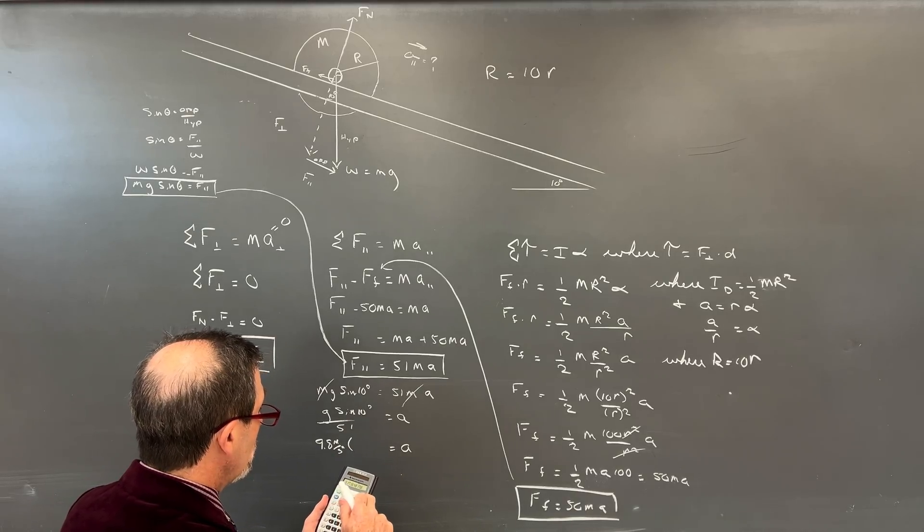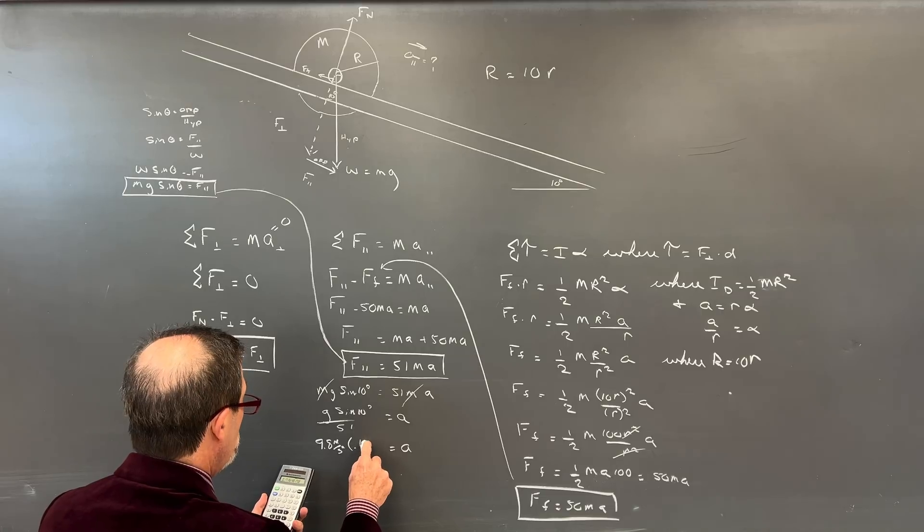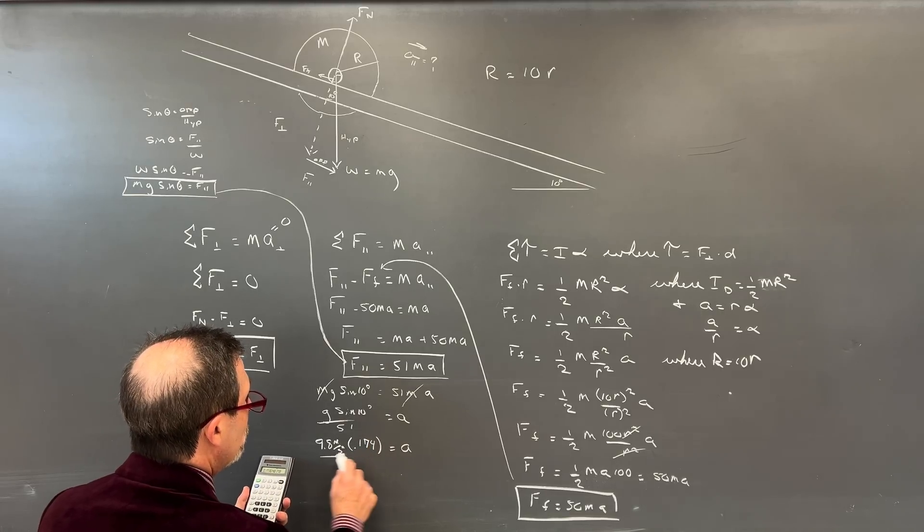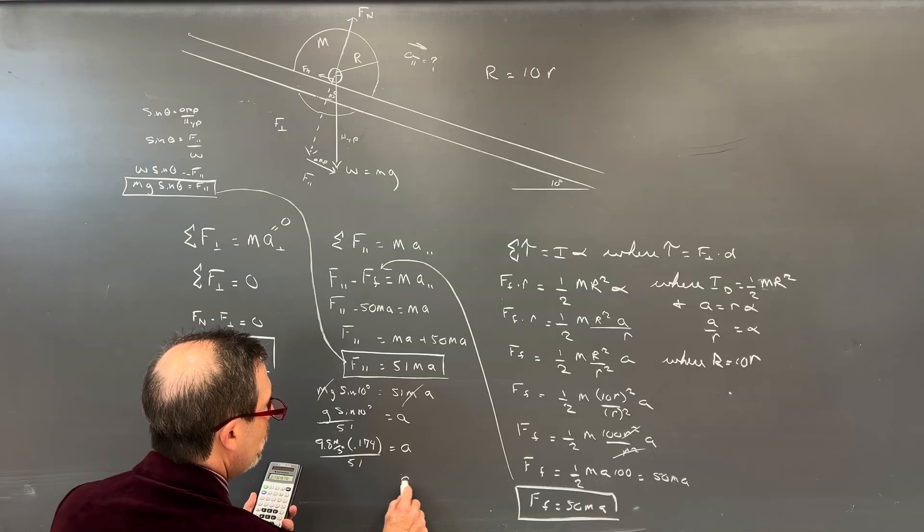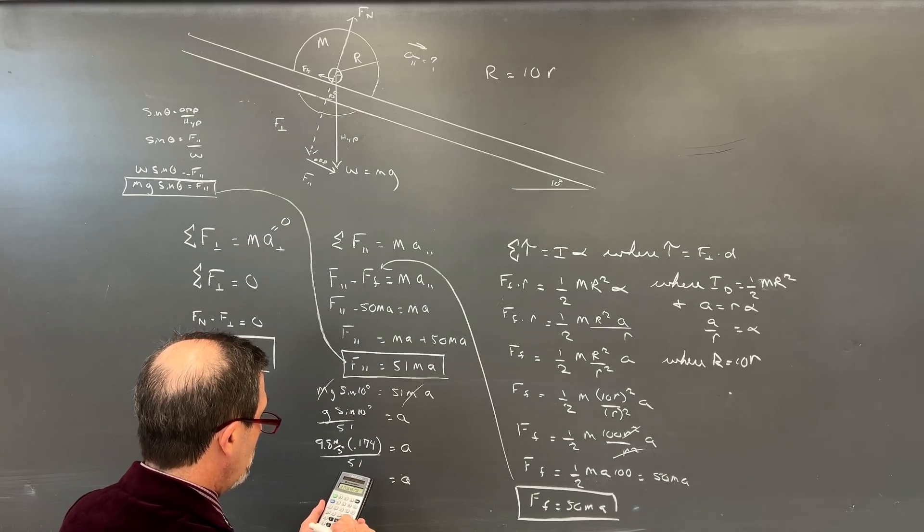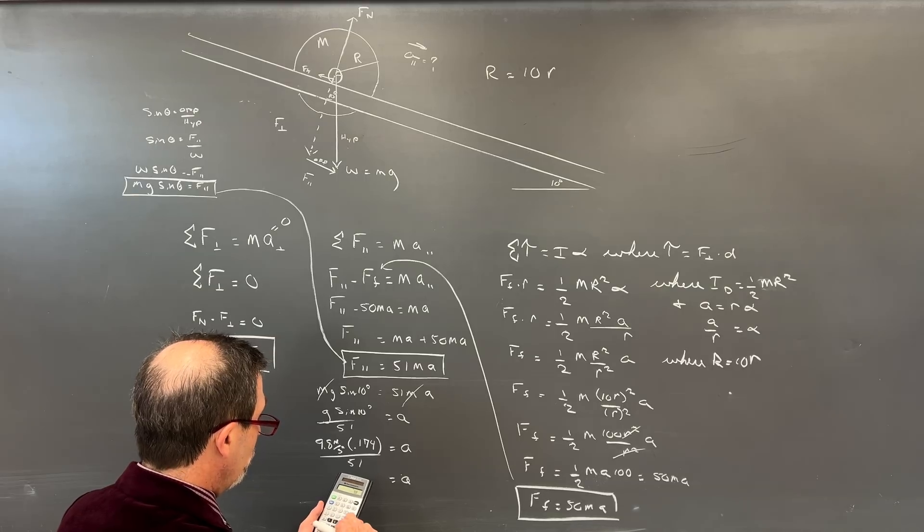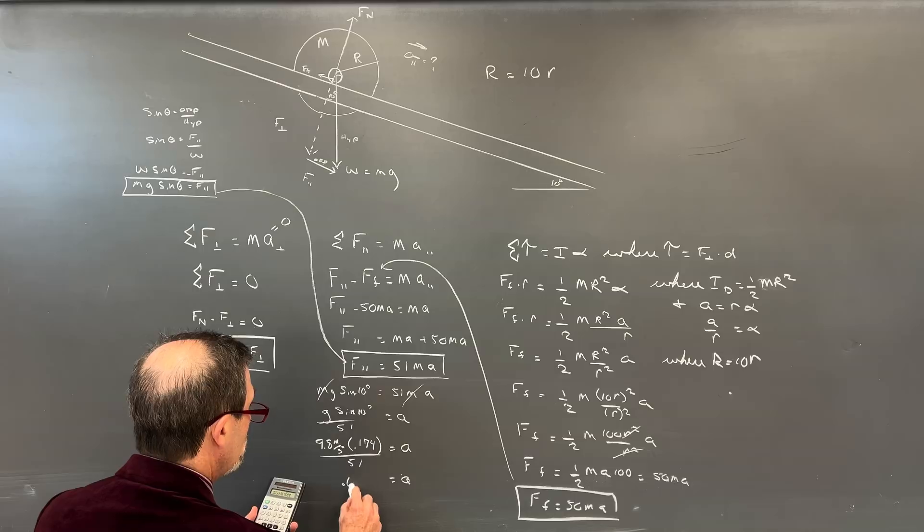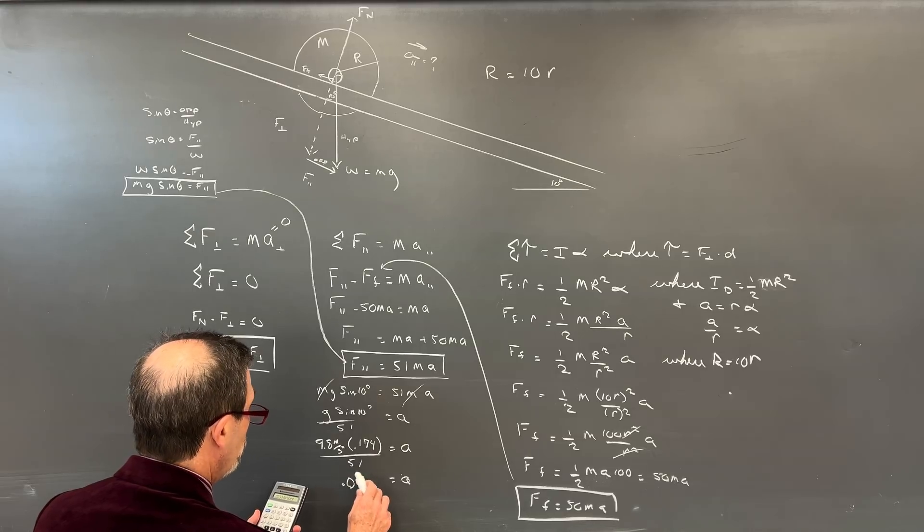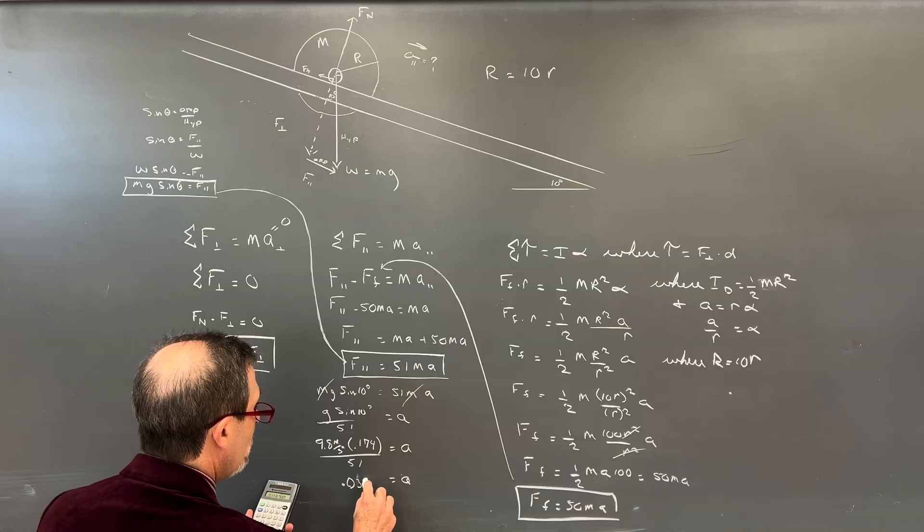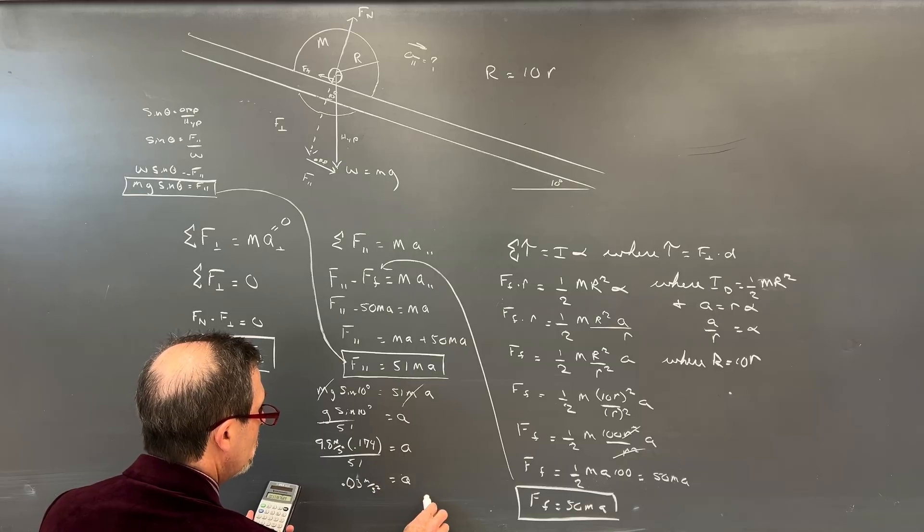I suspect this is going to be going rather slow. So our force parallel here, we can end up saying, well, this is going to end up being our opposite side, and this is our hypotenuse. So we can end up saying the force parallel would simply be this sine function.